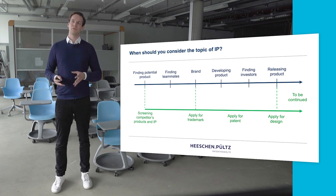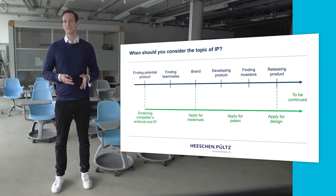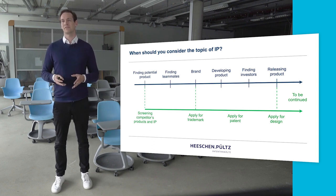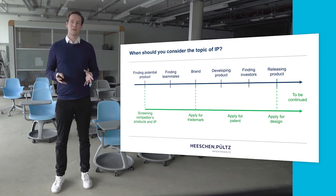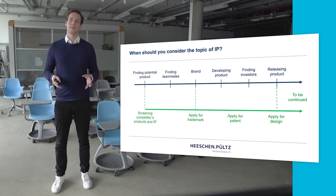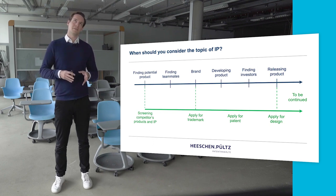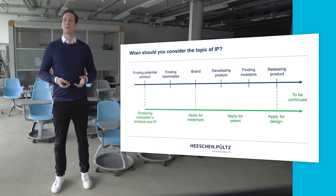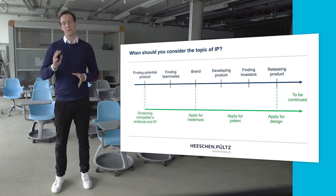Here is the general idea of how your company journey may go. The first thing is you find your product or your niche where you want to go. What you do is screen your competitors, and when doing so, don't only look at the products but also look at what IP matters they have, because the IP may cover more. We will have another video on how to search for that. In the process of developing, you come to a point where you want to give your company a name — you want to have a brand — and that's probably the first time you think about registering a trademark.